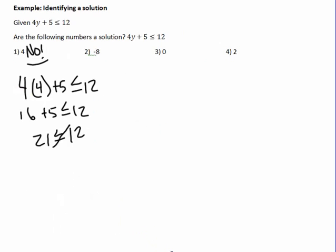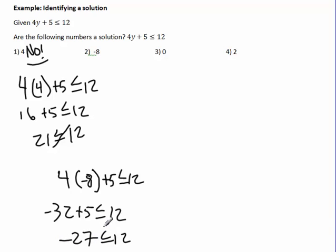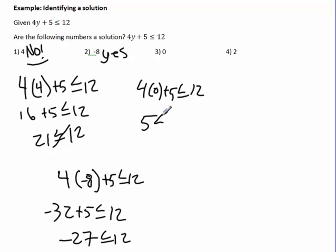Testing y = -8: 4 times negative 8 plus 5 gives negative 32 plus 5, which is negative 27. Is negative 27 less than or equal to 12? Yes — so negative 8 is a solution. Testing y = 0: 4 times 0 plus 5 equals 5. Is 5 less than or equal to 12? Yes, absolutely — so 0 is a solution.